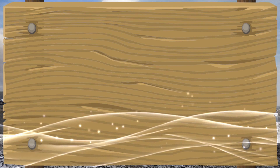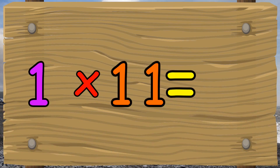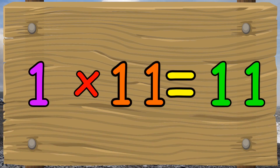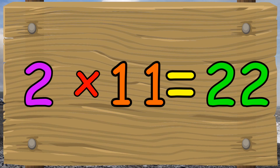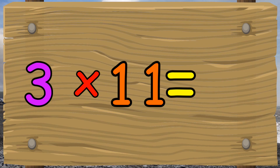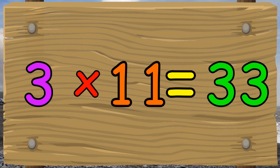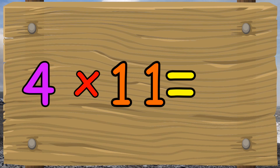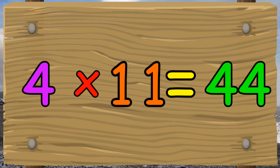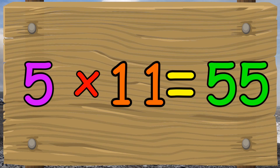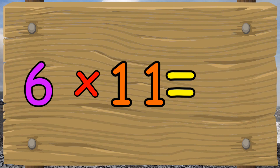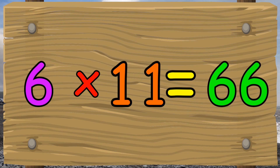Let's try that again. 1 times 11 equals 11. 2 times 11 equals 22. 3 times 11 equals 33. 4 times 11 equals 44. 5 times 11 equals 55. 6 times 11 equals 66.